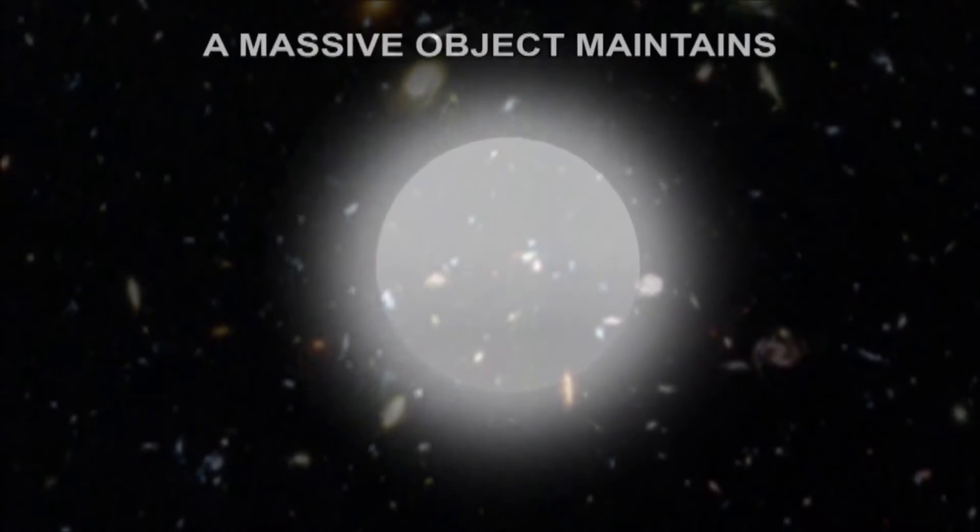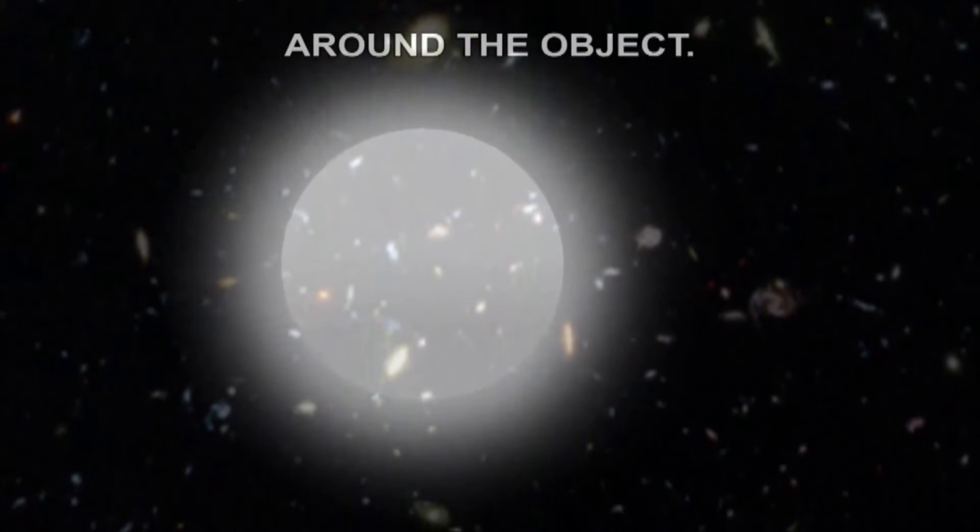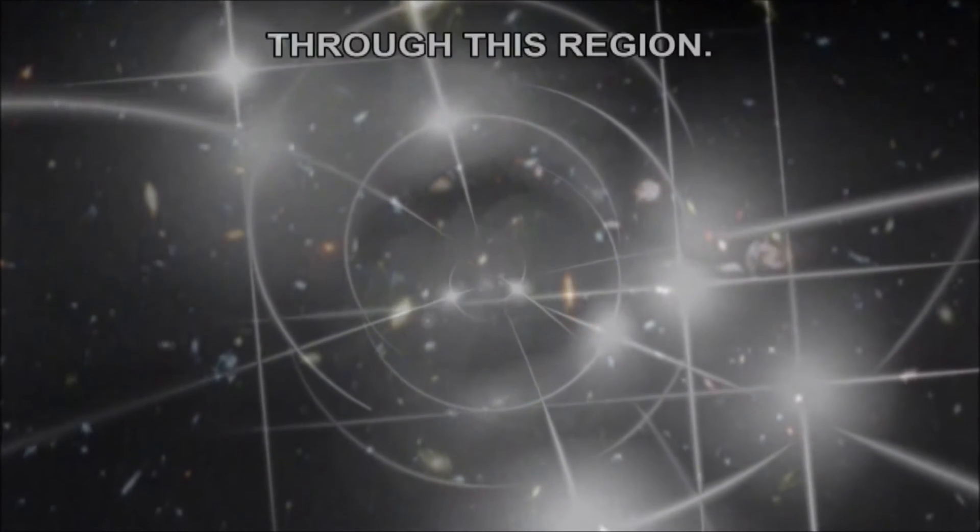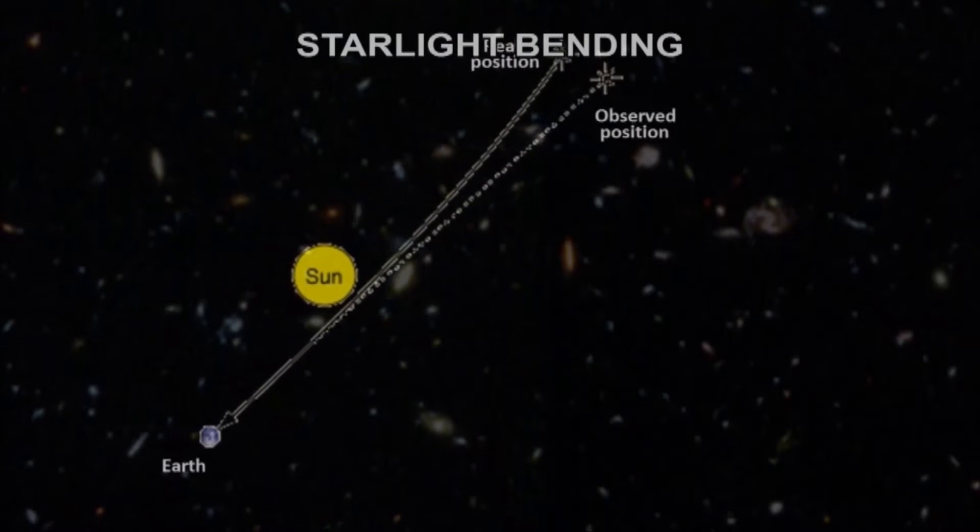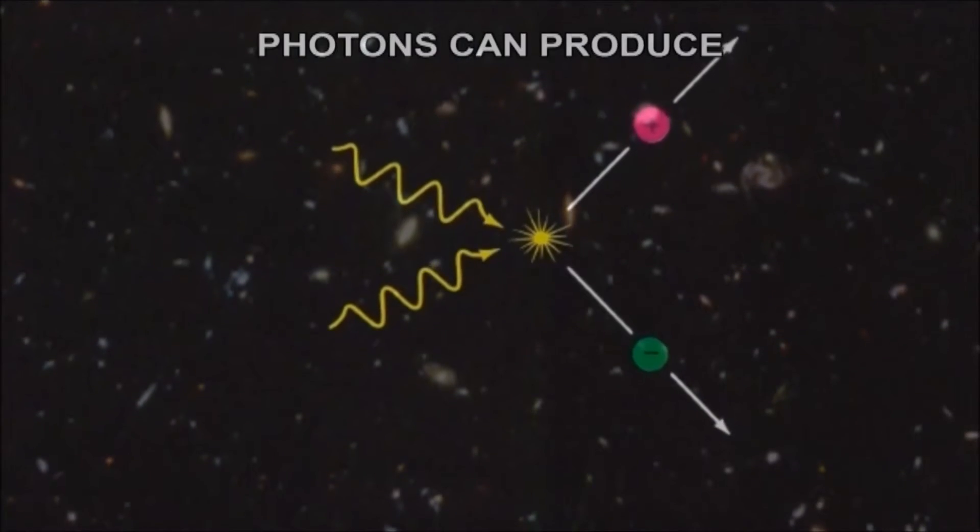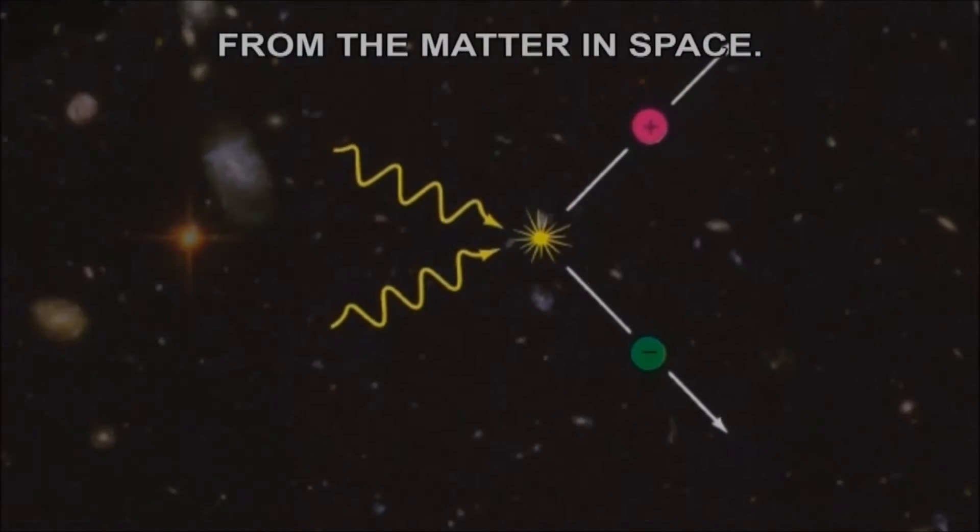Due to gravity, a massive object maintains a denser region of the above stated matter around the object. Light will be refracted when it passes through this region. This can explain starlight bending and gravitational lensing. Also, high-energy photons can produce particle-antiparticle pairs from the matter in space.